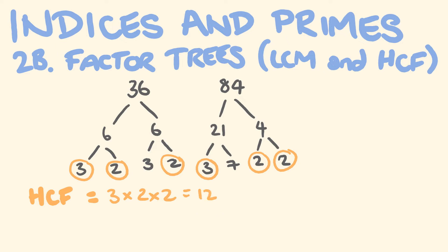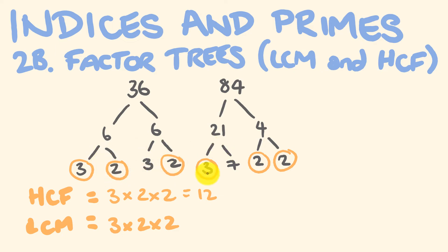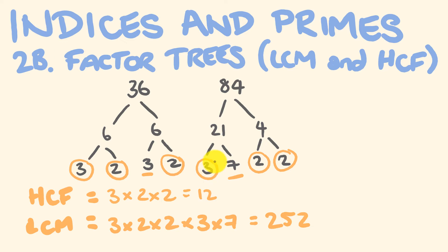Now let's work out the lowest common multiple — that is the lowest number that both of these numbers go into. We're going to use the shared 3, 2, and 2 as part of what we're doing, so 3 times 2 times 2, and then multiply by what's left after this stage. After we've done this, we have a 3 and a 7 left, so we multiply by 3 times 7. So we have: 3 times 2 times 2 is 12, times 3 is 36, times 7 is 252. The lowest number that both 84 and 36 go into is 252.